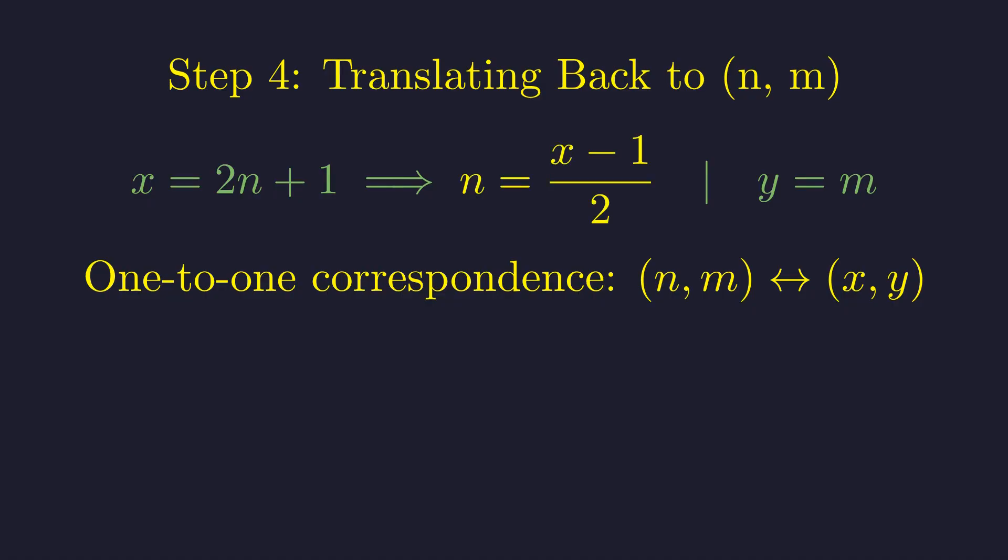For n to be an integer, x minus 1 must be an even number, which means x must be odd. Our solutions for x, which are 1, 3, 17, and 99, are all odd, so this condition holds.